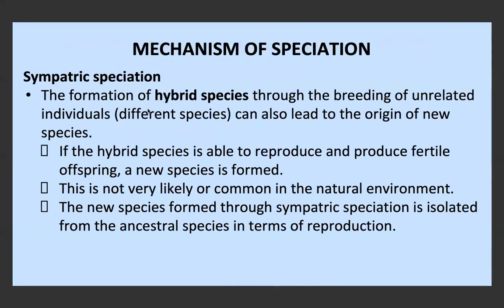We can also have the formation of hybrid species causing sympatric speciation through the breeding of unrelated individuals, which can lead to new species. If the hybrid species can reproduce and produce fertile offspring within themselves, we say a new species has formed. This is very uncommon in the natural environment because the chances of two separate species reproducing and producing fertile offspring is very rare, but every now and then it does happen. This new species is isolated from the ancestral species because it can't reproduce with them to produce fertile offspring, but it can reproduce among itself — we then call this a completely new hybrid species.